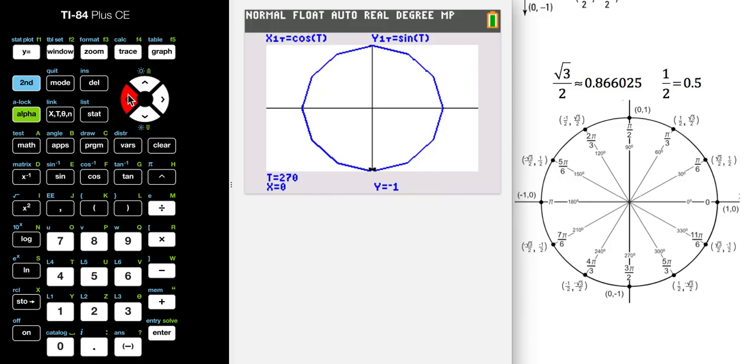So just a quick handy way of getting that unit circle on your calculator in case you need to quickly check some of those ordered pairs. Thanks for watching, and be sure to share with your friends.